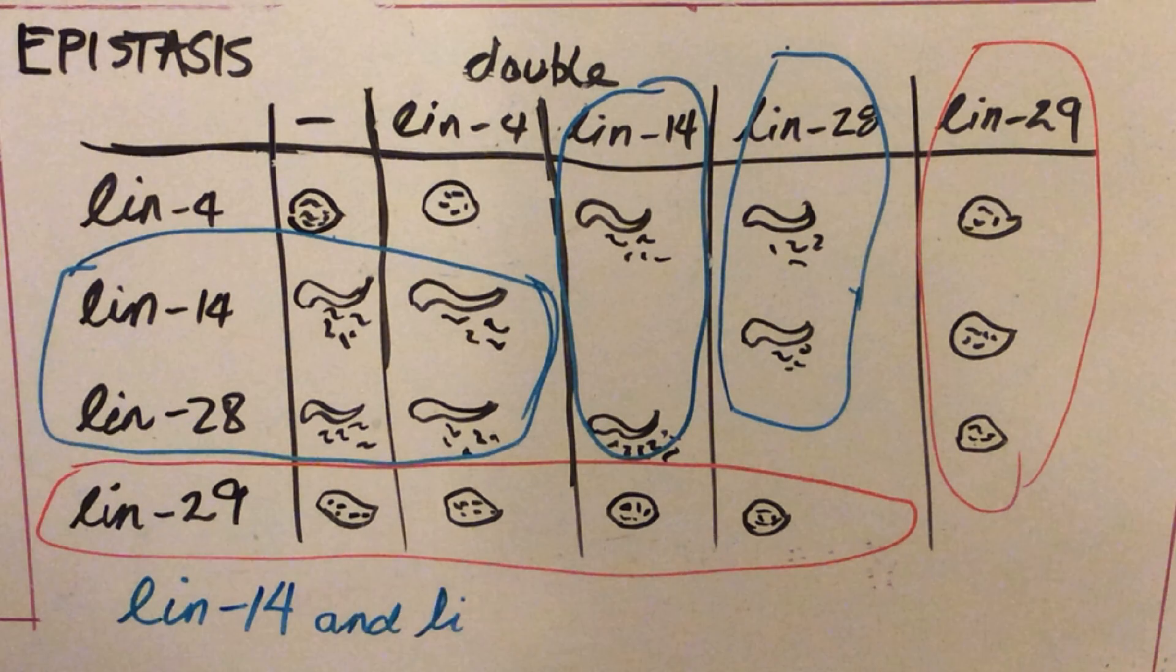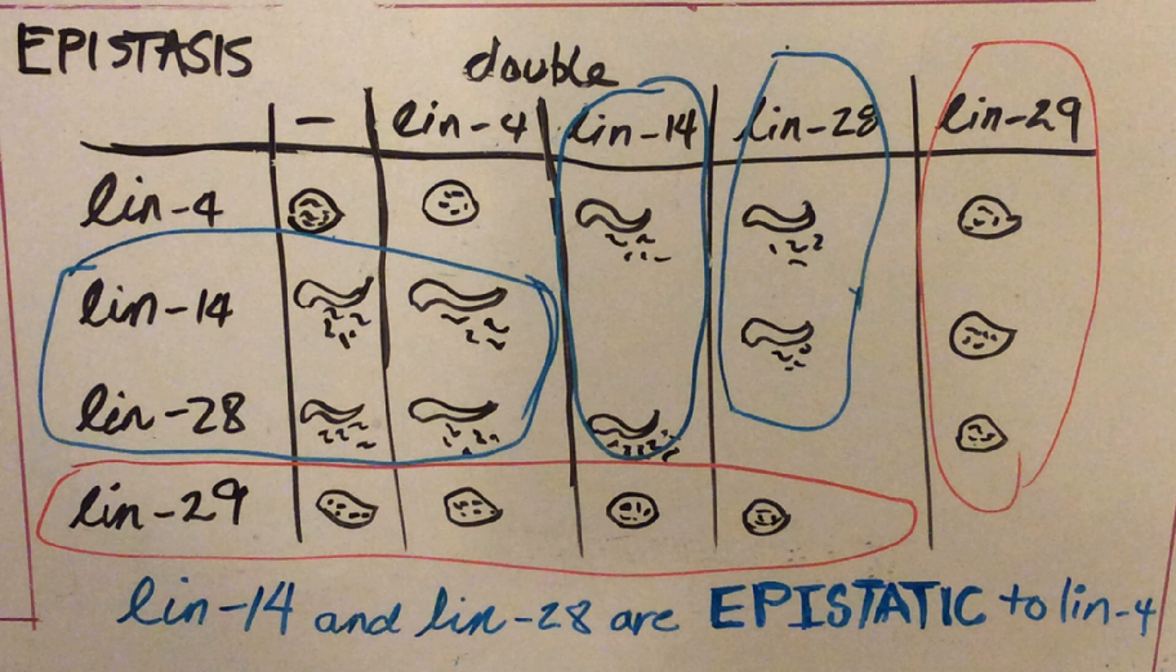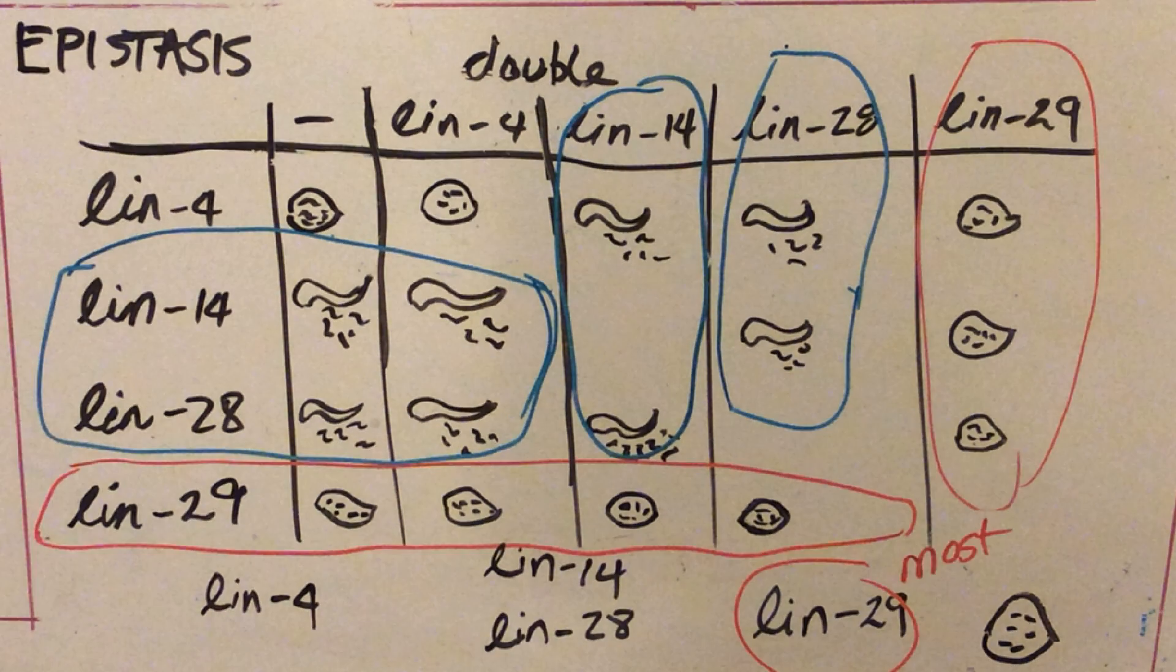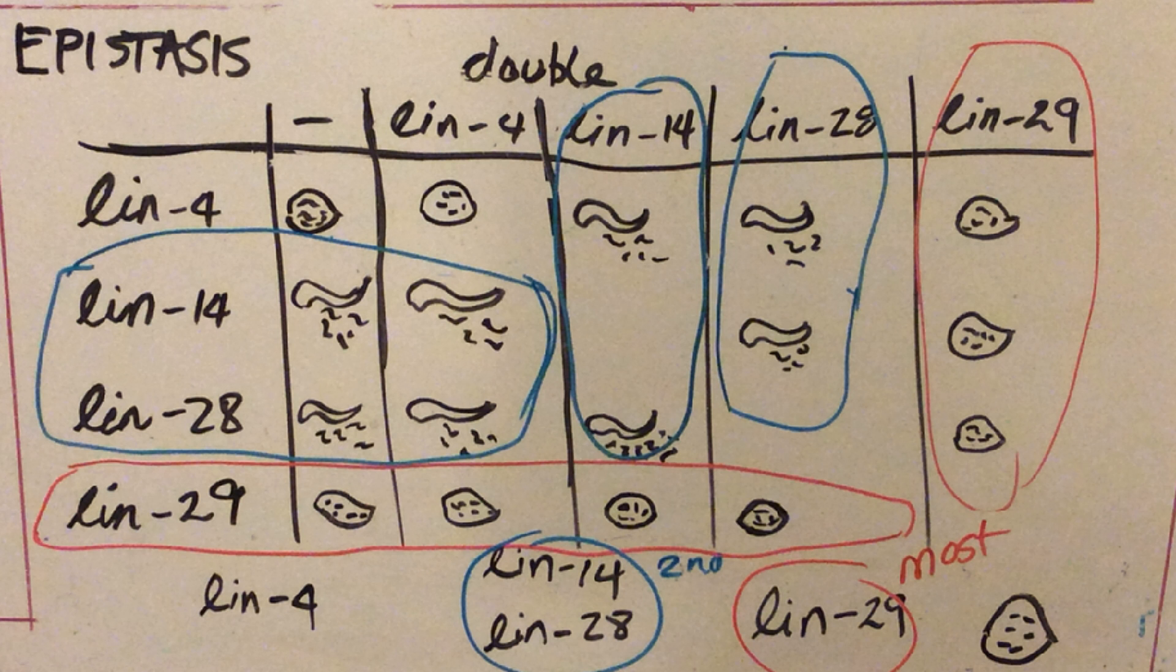So this epistasis allows us then to build a pathway. And we are going to place in the pathway LIN-29 is the most epistatic, LIN-14 and 28 are second most, and LIN-4 is the least epistatic, so it's on the left. Now you've ordered this pathway, and you can see the way that it's ordered.